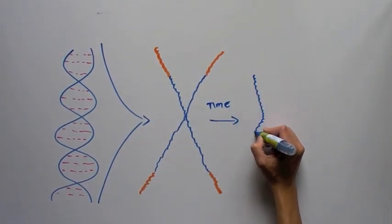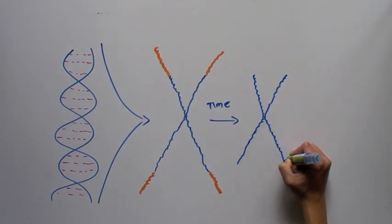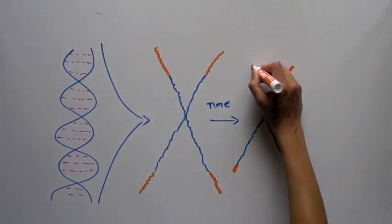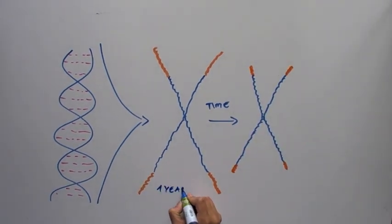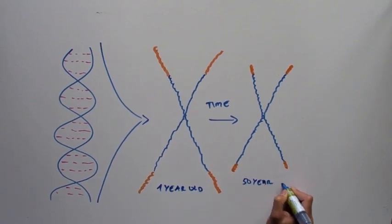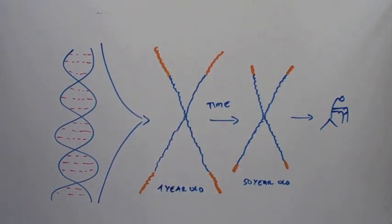But one interesting part about chromosomes is that they get shorter as we age. They behave kind of like a clock, and they are responsible for many aging symptoms that we develop, such as decreased renewal of organs such as the intestines and the skin.